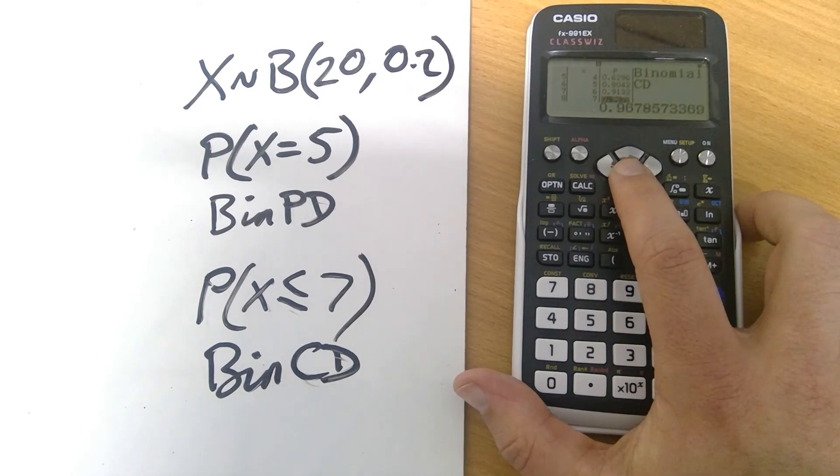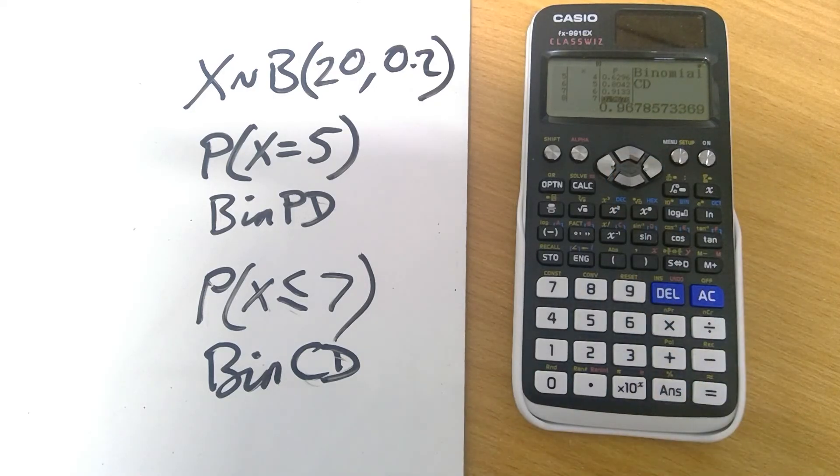You can, of course, work out any of the values that you would get given in a table. But the advantage of doing it by calculator is that you can create cumulative distribution tables or probability distribution values for any value of N and any value of P. It's a very useful tool. Hopefully that helped and good luck with it all.